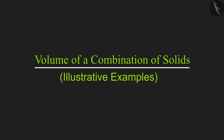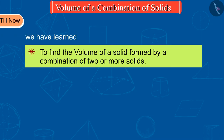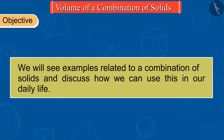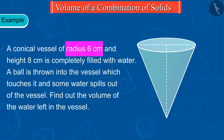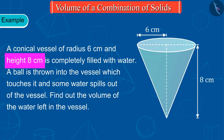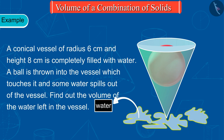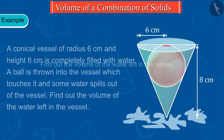Welcome to this video. Till now we have learned to find the volume of a new solid formed by the combination of two or more solids, and of the solid formed when one solid is taken out of the other. Today we will see how we can use this in our daily life. A conical vessel of radius 6 centimeters and height 8 centimeters is completely filled with water. A ball is thrown into the vessel which touches it and some water spills out of the vessel.